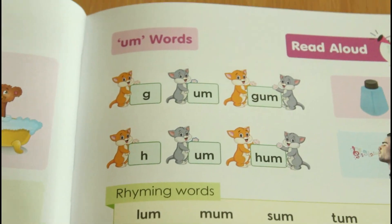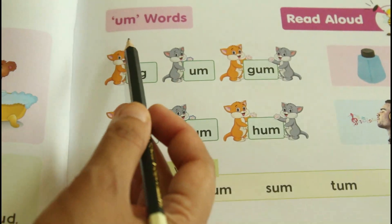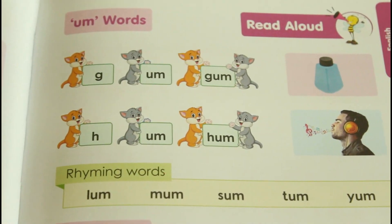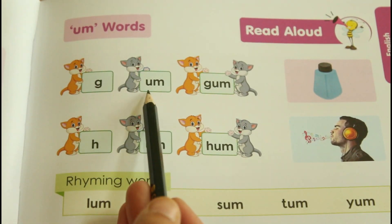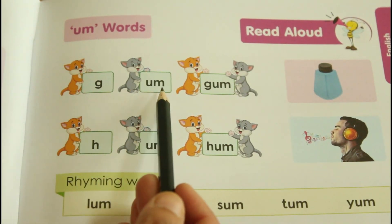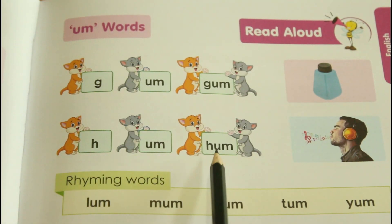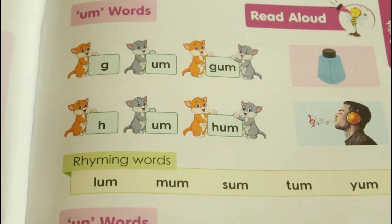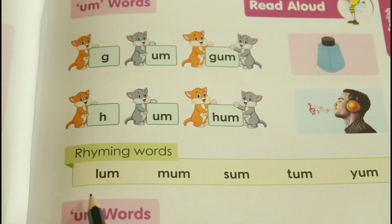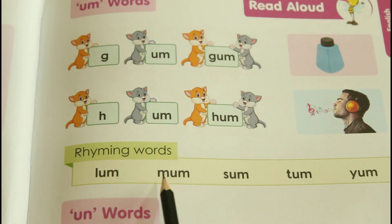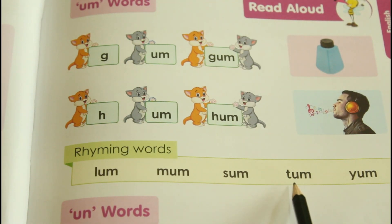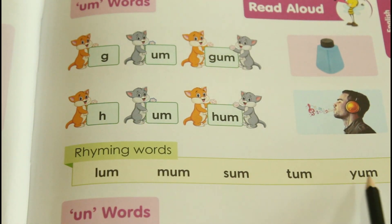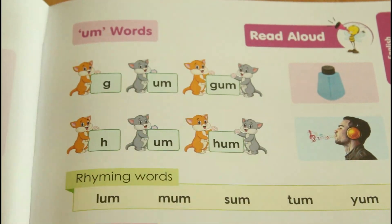Now let's see the next word family — UM words. G-um: gum. H-um: hum. And the rhyming words: lum, mum, sum, tam, yum. These are the rhyming words for the UM family.